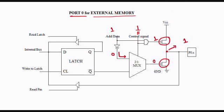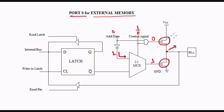Now we will see how to output 0. We will consider address bit as 0, and we get 1 here as the inverted data. We will get 1 here. 0 ANDed with 1 gives 0 here, so this is an open switch and this is a closed switch. If I go and measure the value at this point, it is going to be 0, because this point is connected to ground through the closed switch. In this way, we output 0.